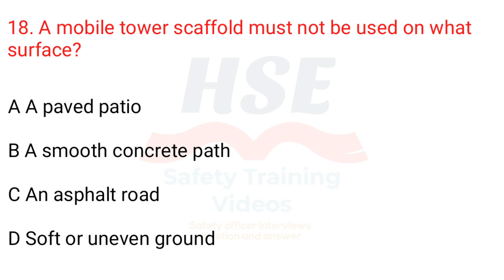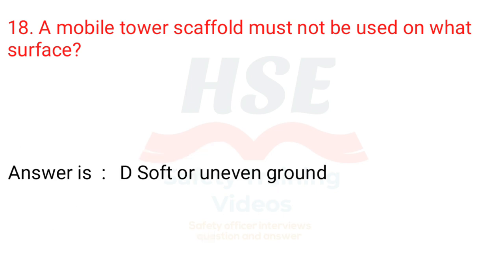Question 18: A mobile tower scaffold must not be used on what surface? A. A paved patio. B. A smooth concrete path. C. An asphalt road. D. Soft or uneven ground. Answer is D. Soft or uneven ground.